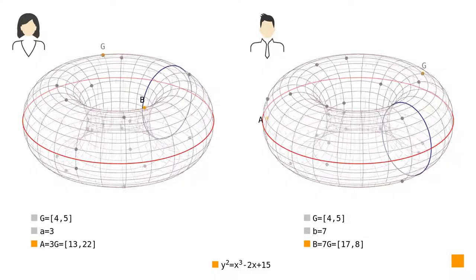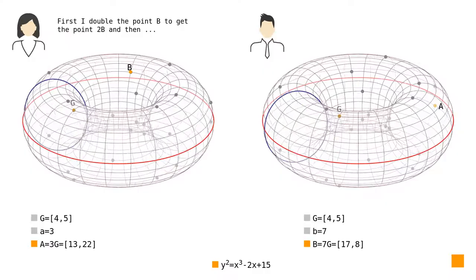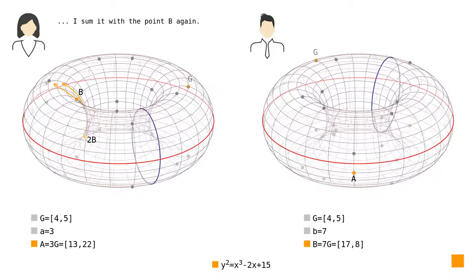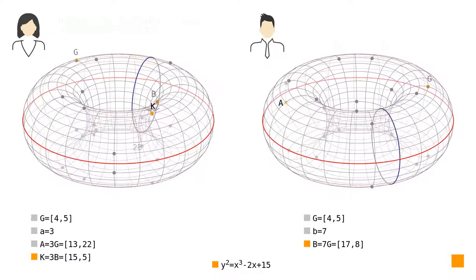To continue with the key exchange, Elise multiplies the point B by her secret number. First, I double the point B to get the point 2B, and then I sum it with the point B again. This way, I got the point K with coordinates (15, 5).